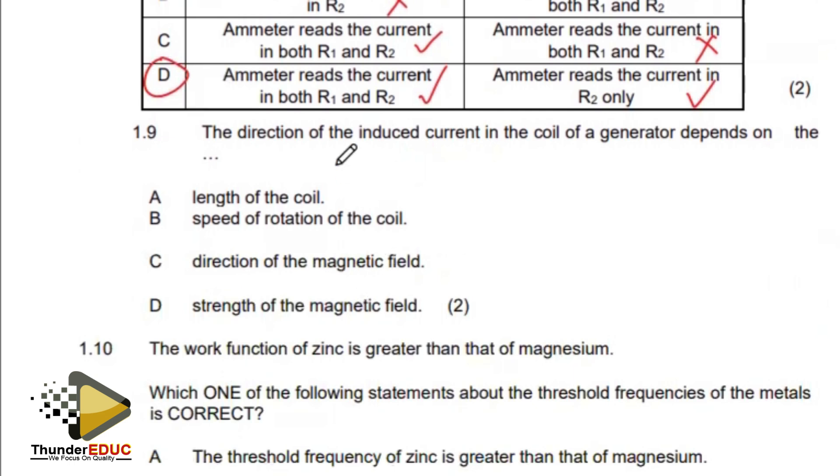1.9: The direction of an induced current in a coil of a generator depends on what? The length of the coil, the speed of rotation, direction of the magnetic field, the strength. The length is out. How does the length influence direction? How does speed influence direction? It doesn't. How does the strength of the field influence direction? So all these will just work on the amount of induced current or induced EMF. The direction of the magnetic field will tell us more about the direction of the induced current.